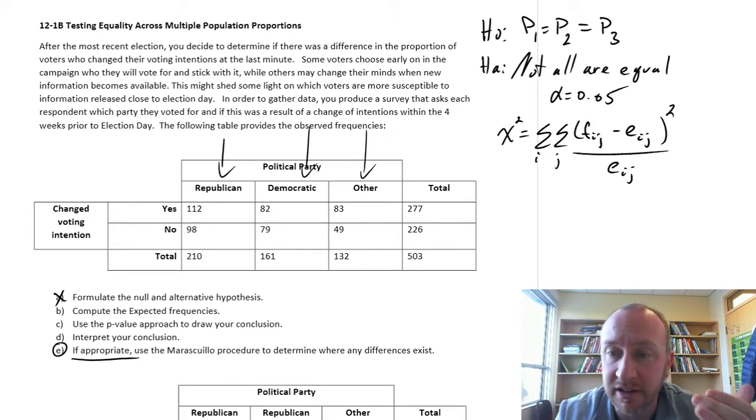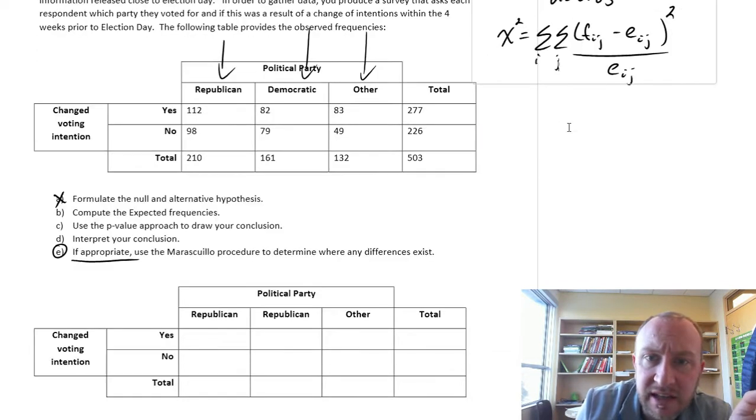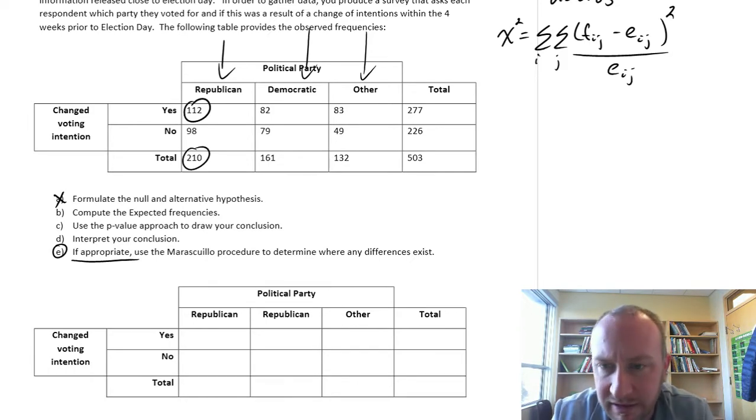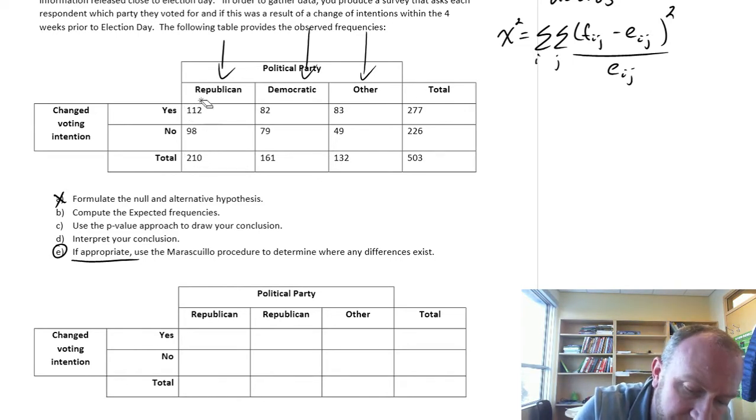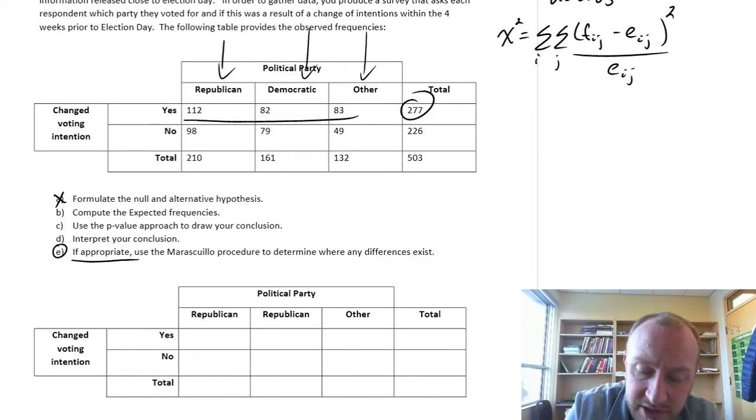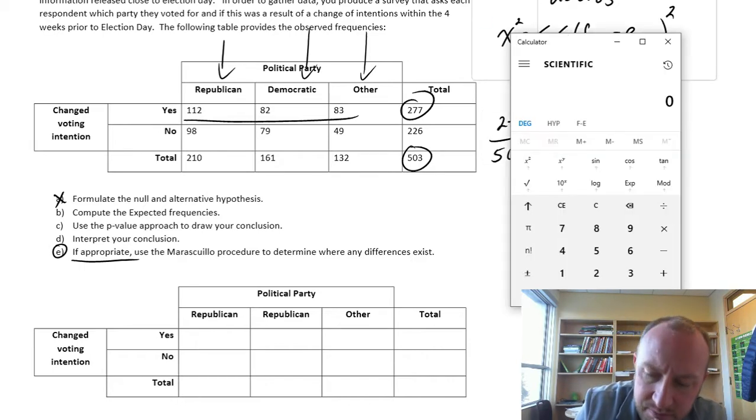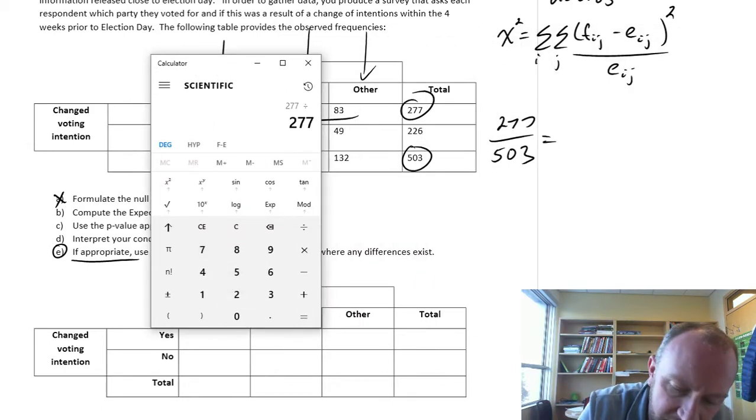As all hypothesis tests that we've done, we always do these under the assumption that the null hypothesis is true, unless we have evidence to show otherwise. So if all three of these proportions are equal, what would be our expected frequencies in this data set? So what we need to do here is identify, here's our table. So in our sample, we had 112 out of 220 said yes, their voting intentions changed for Republican voters, so on and so forth for each of our three parties. If the null hypothesis is true, and if these are all the same, all these proportions are equal in the population, well then that means that we can ignore these values and say, well, our point estimate of that common proportion, well that would just be 277 out of 503.